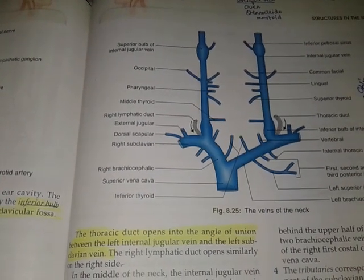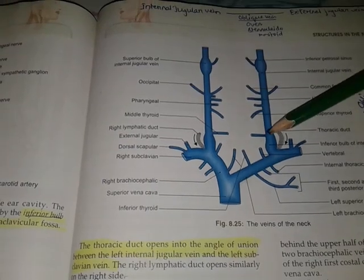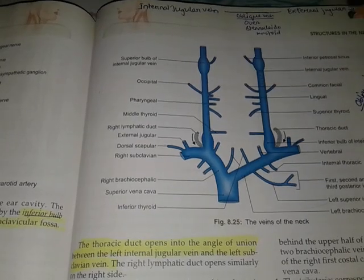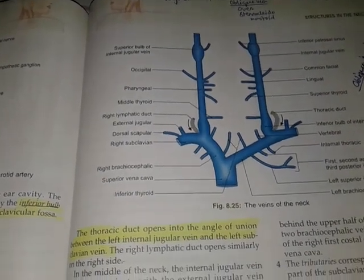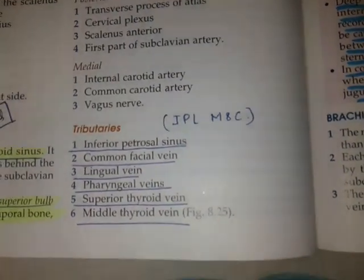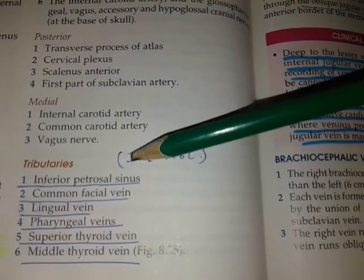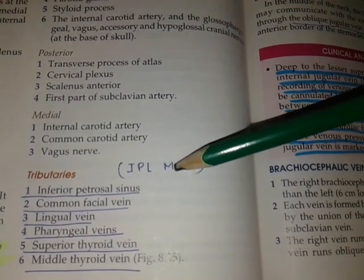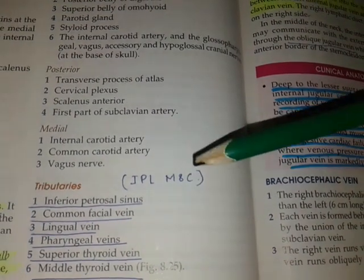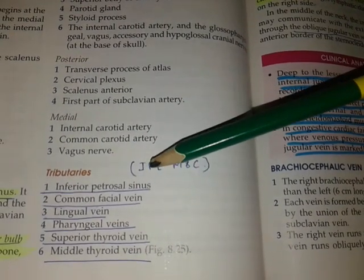The internal jugular vein drains blood from the brain, the neck, and also the face. Here is the mnemonic from my book — the tributaries of the internal jugular vein: IPL MSC. IPL stands for Indian Premier League and MSC for Master of Science. By remembering 'IPL MSC,' you can easily remember all the tributaries draining into the internal jugular vein.